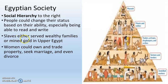Slaves generally either served wealthy families or mined gold in upper Egypt where there are gold mines. There's not a lot of slaves, but there are slaves in ancient Egypt. Women could actually own and trade property, seek their own marriages, and even divorce if they were unhappy. So women have a lot of rights in Egyptian society that most societies did not have for women.